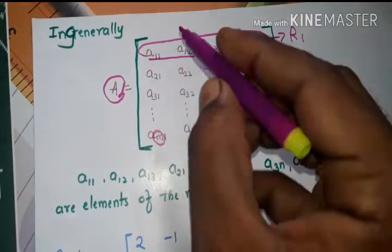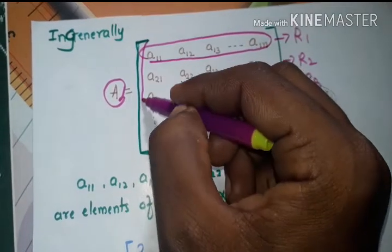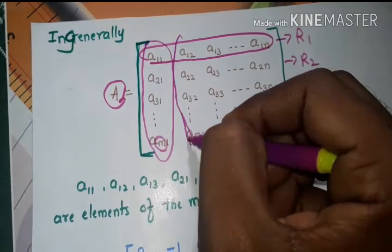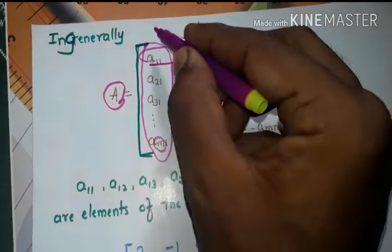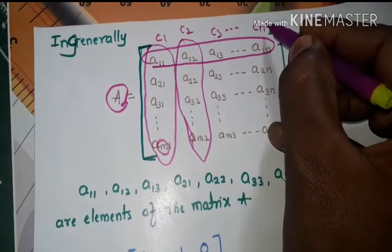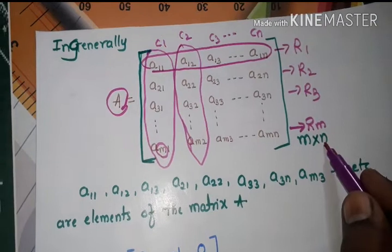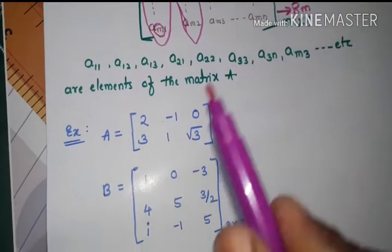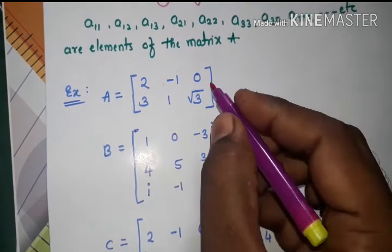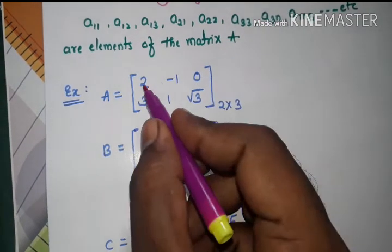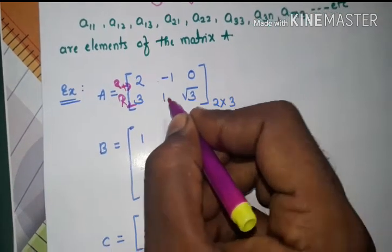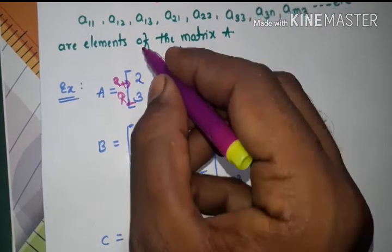Similarly, the number of columns: which is column number one, column number two - C1, C2, C3, and Cn. The number of columns are n. For example, A is one given matrix. Here, the number of rows are one, two - number of rows are two. And the number of columns are three.